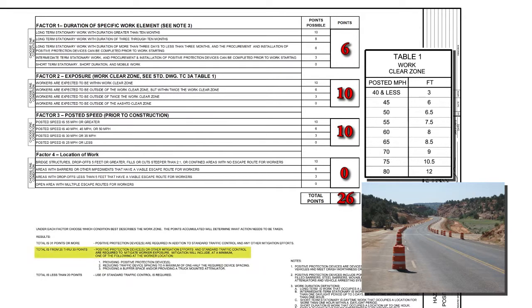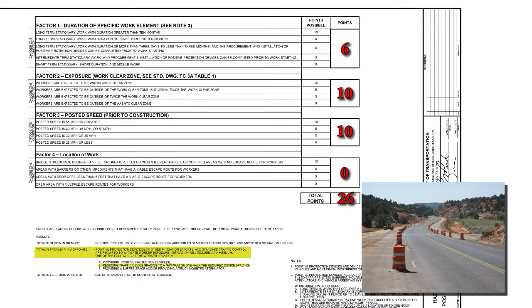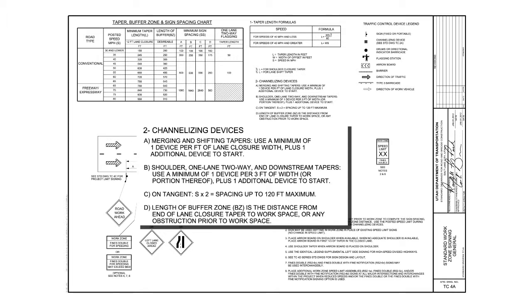Let's look at the results. Positive protection devices or other mitigation efforts and standard traffic control are required to mitigate worker exposure. Mitigation will include, at a minimum, one of the following: providing positive protection devices; reducing traffic device spacing to a maximum of one-half the required device spacing; providing a buffer space; and/or providing a truck-mounted attenuator. In this case, we would choose number 2 — reduce traffic spacing to a maximum of one-half the required device spacing. According to TC4 series, the maximum allowed device spacing is 120 feet. Take this number and divide it by 2, which will provide the maximum required device spacing of 60 feet.